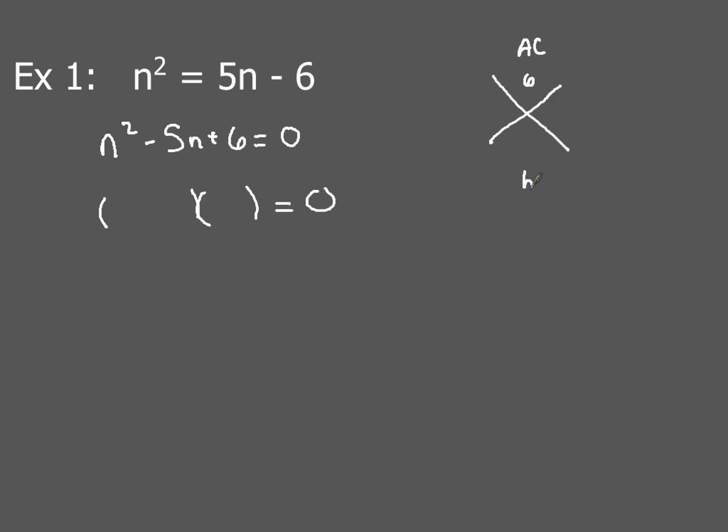Now the B term, so B is gonna go right there, and that's your linear term for a quadratic equation, and that in this case is negative 5. So what we want to do is find two numbers whose product is 6 and whose sum is negative 5.